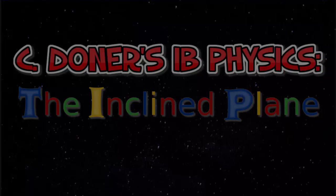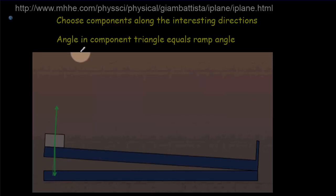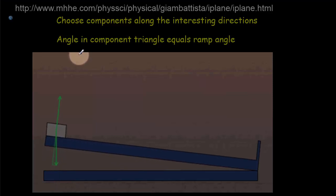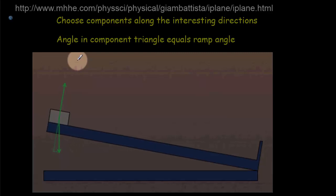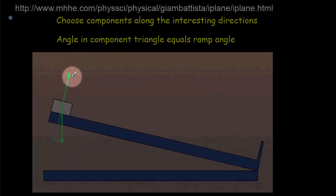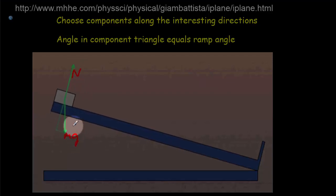We're going to examine the inclined plane. It's not a problem that's particularly emphasized by the IB, but most physics teachers find it a really fundamental example. When we have an object on an inclined plane, if we suppose it's frictionless, then the only two forces acting would be the normal force and the weight mg.